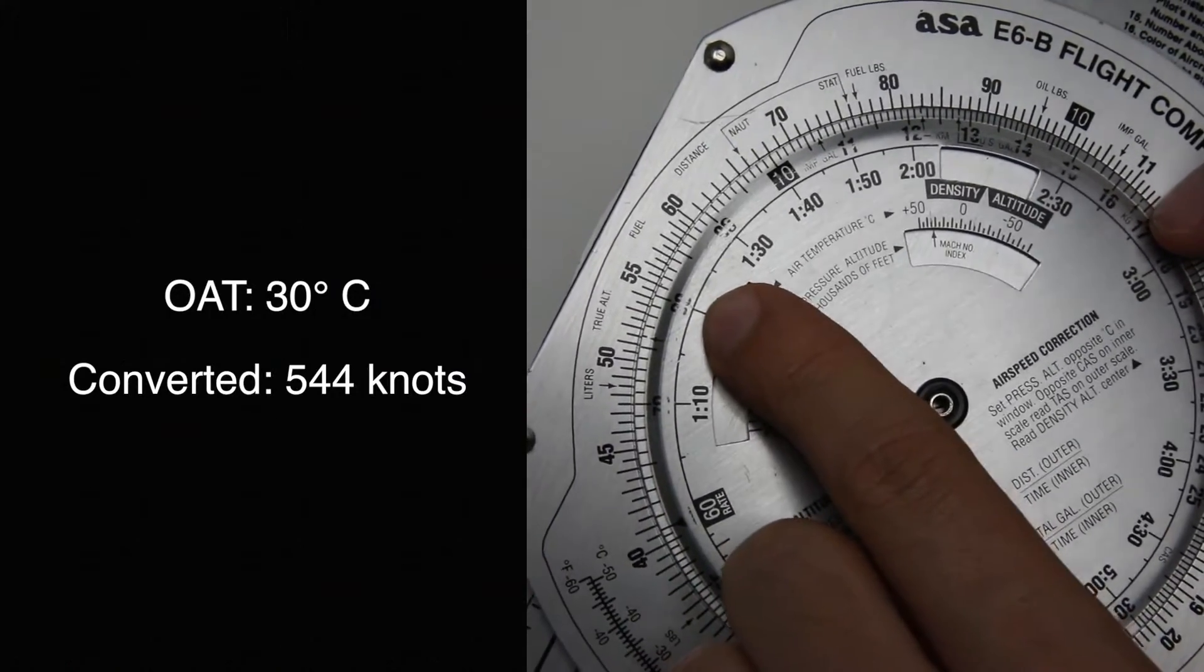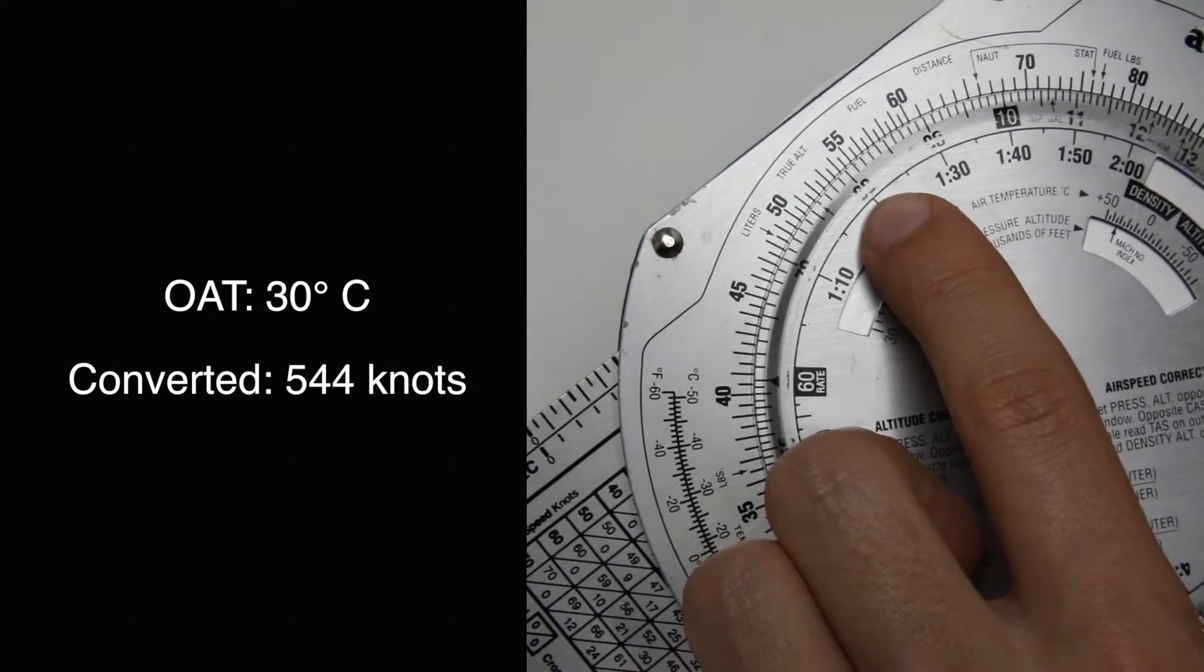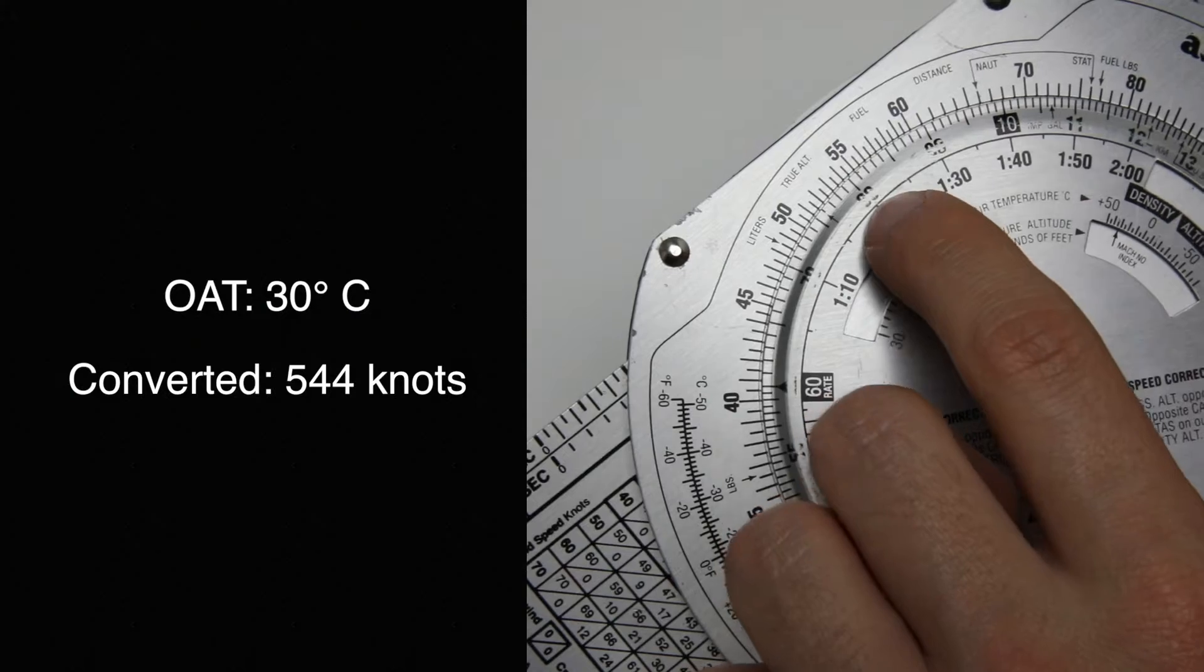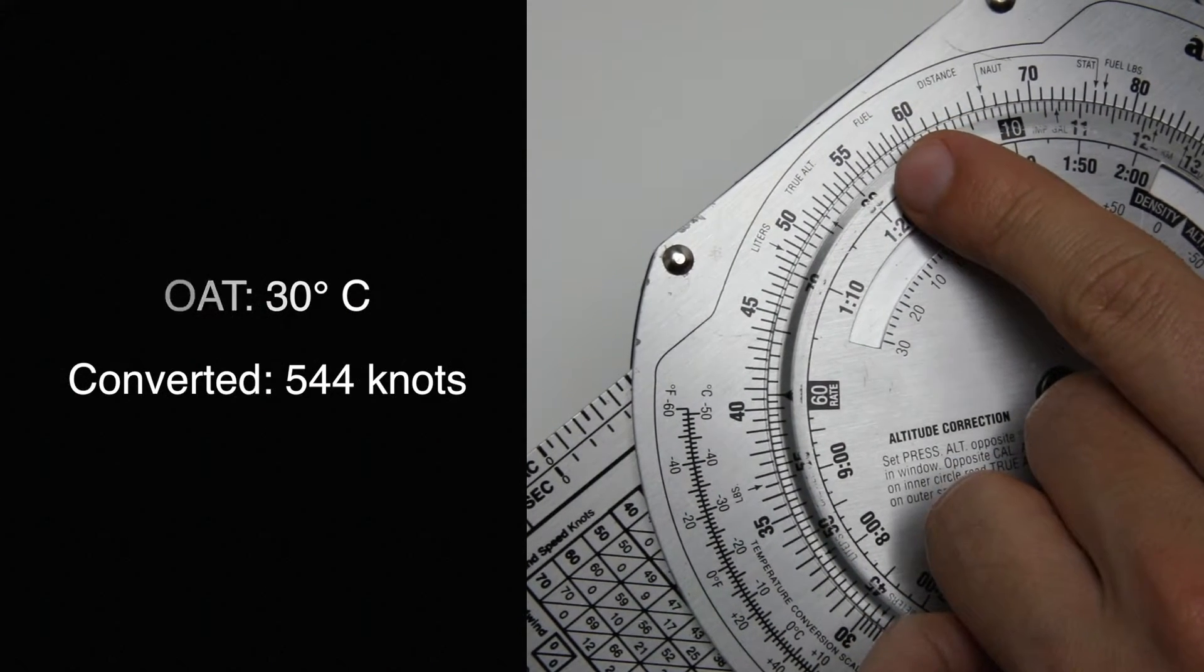In this example we're doing 0.8, sorry my E6B is a little old so it has some scratches. So Mach 0.8 is going to be somewhere around 544 knots, more or less.